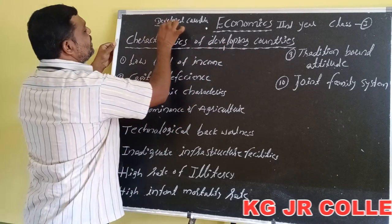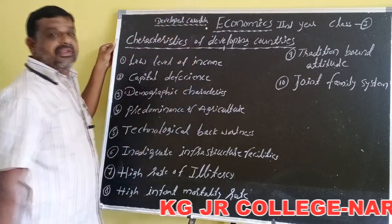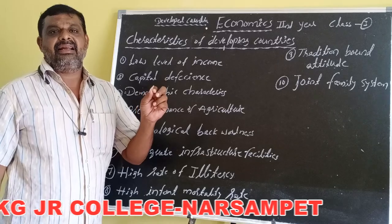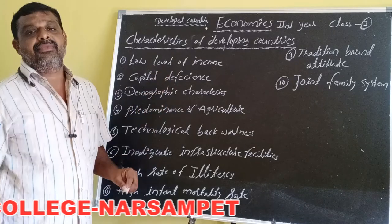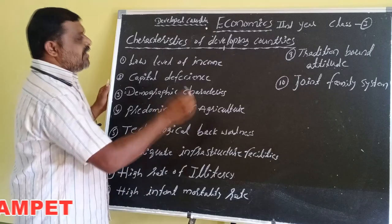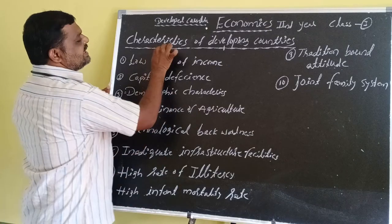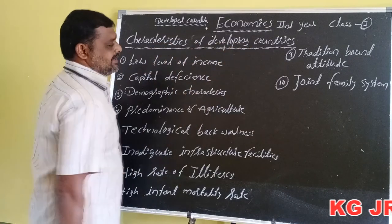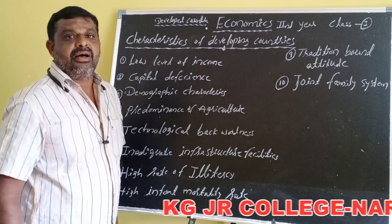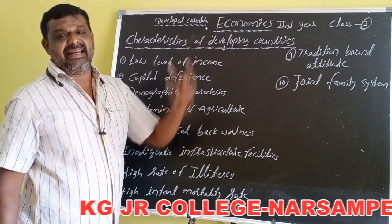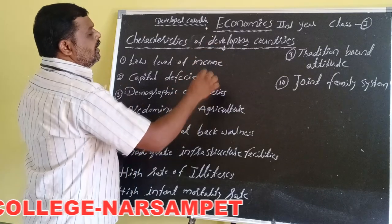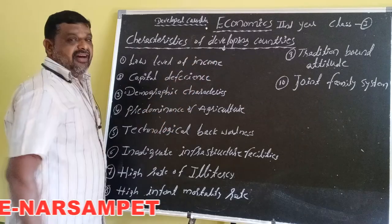The developed countries are also called as high income countries, industrialistic countries, and modern countries. The developing countries are also called as poor income countries, poor countries, and low level of income countries.